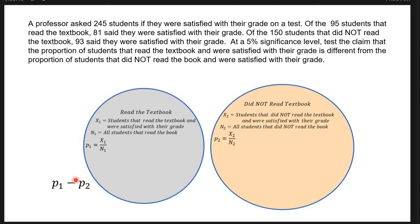If P1 minus P2 equals zero, that means they are the same. If P1 minus P2 is not equal to zero, that means they're different. We could also check if P1 is bigger or smaller than P2, but that would require a different alternative hypothesis. Since the problem says 'different,' my alternative hypothesis is just that P1 minus P2 is not equal to zero.